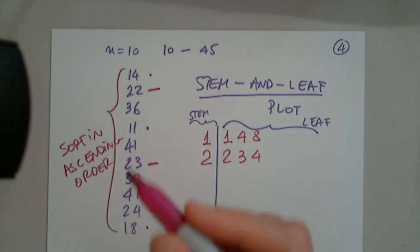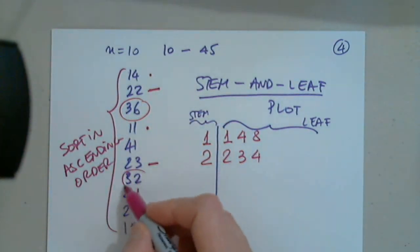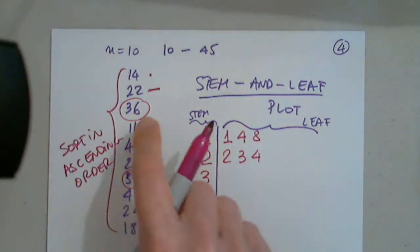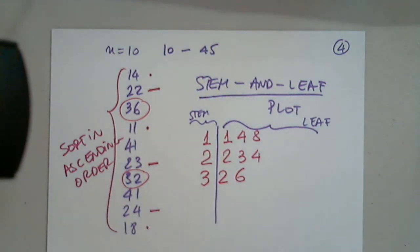Next is 3. I have 3. So the next in line is 3, 2, and 6. 2 and 6. Finally, the last one is 4. And I have a 1, and a 1, and nothing else. 1, 1.